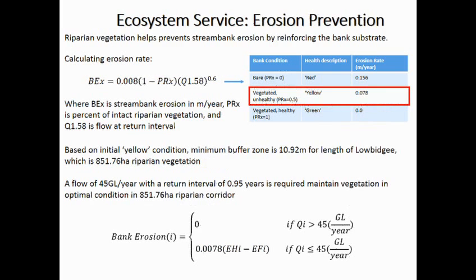We go ahead and do the same for erosion prevention. Healthy trees stabilize banks by reinforcing the substrate. For bare, healthy, and unhealthy vegetation, and based on catchment properties, we find the expected erosion rate for the Low Bidgee catchment. As a result, we design the minimum riparian corridor required to help stabilize those banks and prevent erosion.